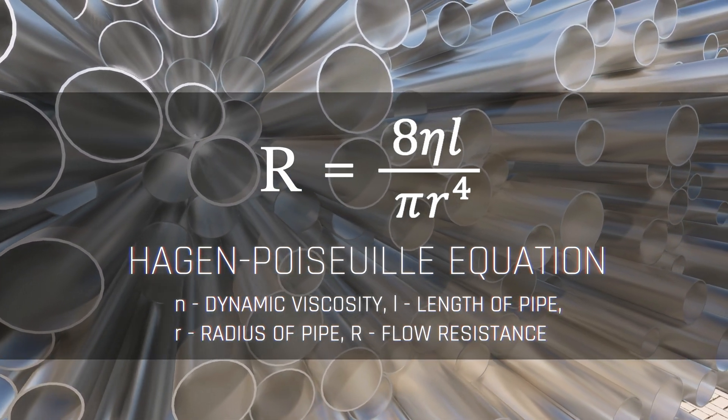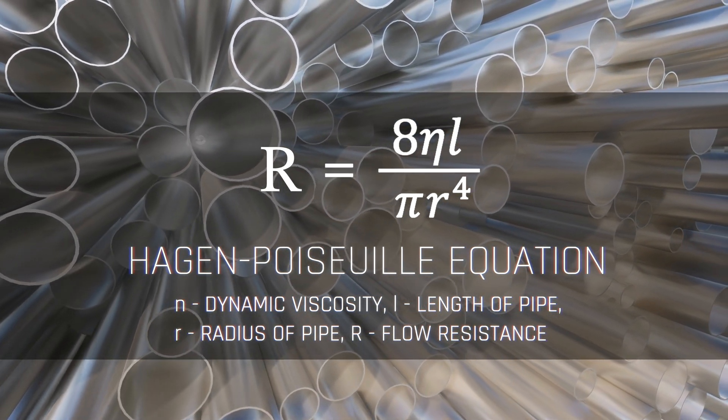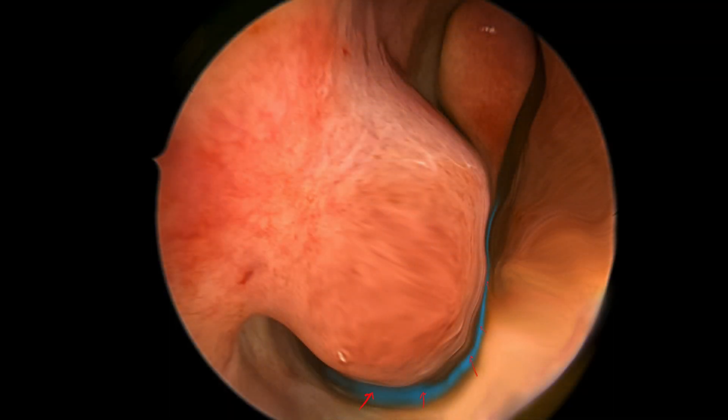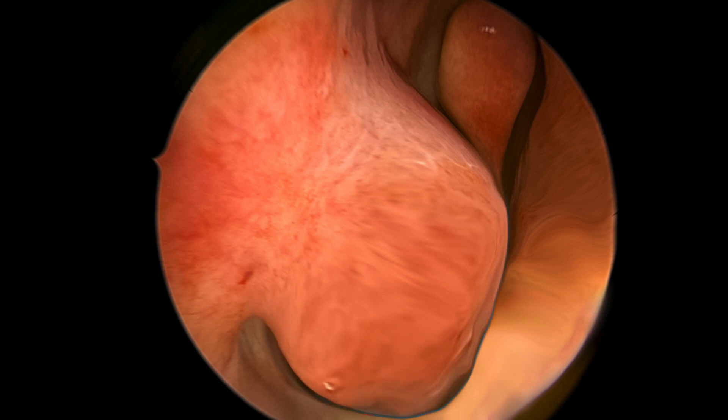As I pointed out in my turbinate video, this impact on nasal breathing is explained by the following physics principle: flow through a tube is impacted by the radius of the tube, or how open it is, to the fourth power. In other words, any narrowing at key areas of airflow resistance within the nose has a dramatic impact on the overall airflow through the nose. A more open nose also allows the air to flow in a laminar fashion or with less turbulence, which decreases the effort needed to breathe well through the nose.